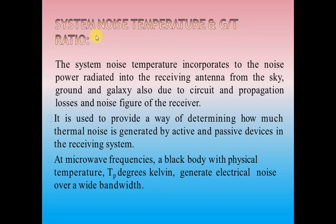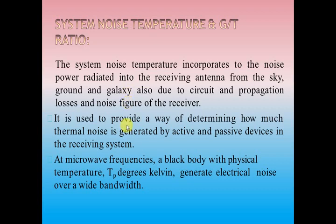The system noise temperature is one of the important parameters affecting satellite communication. We look at what are the sources of the system noise temperature and how it will affect the satellite link design, and how we are going to calculate the G/T ratio. The system noise temperature is the amount of noise generated due to the circuit and propagation losses and the noise figure of the receiver. It incorporates the noise power radiated into the receiving antenna from the sky, ground, as well as the galaxy.